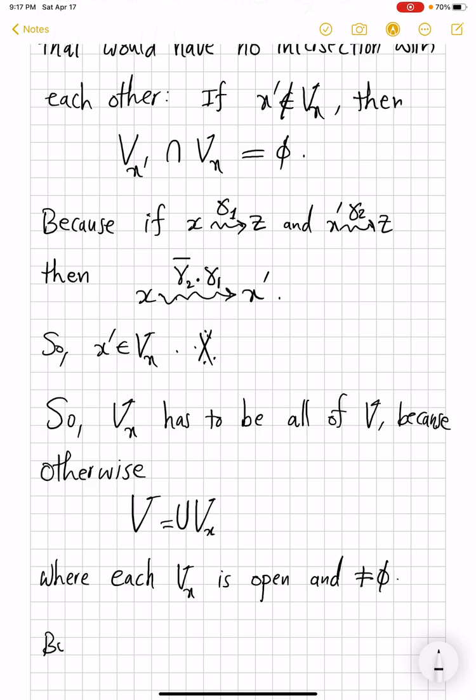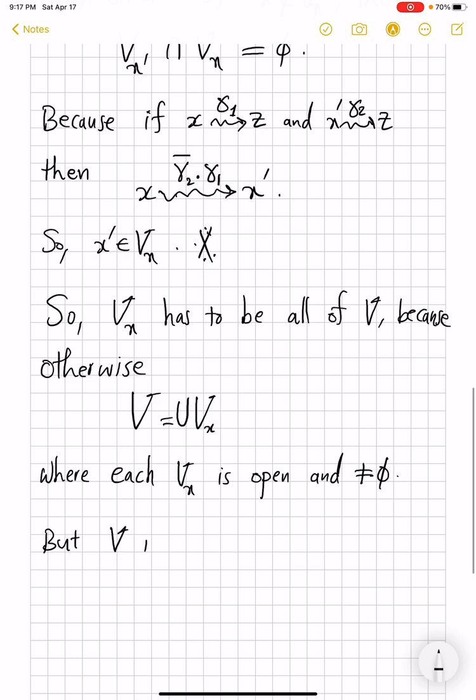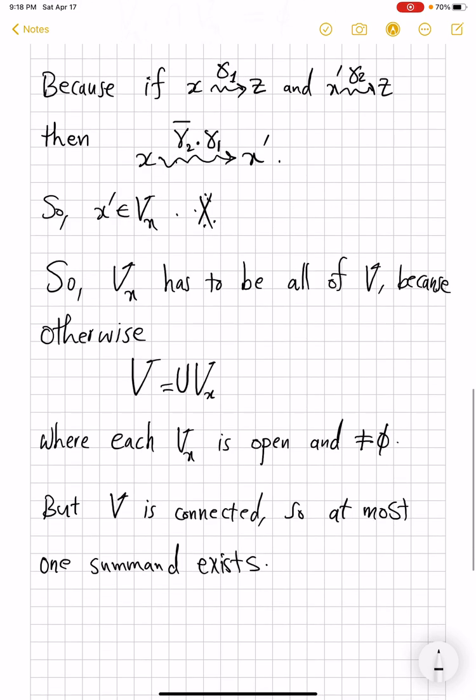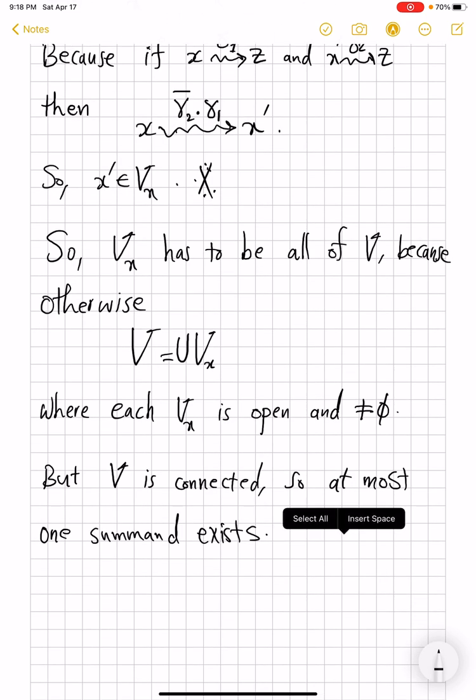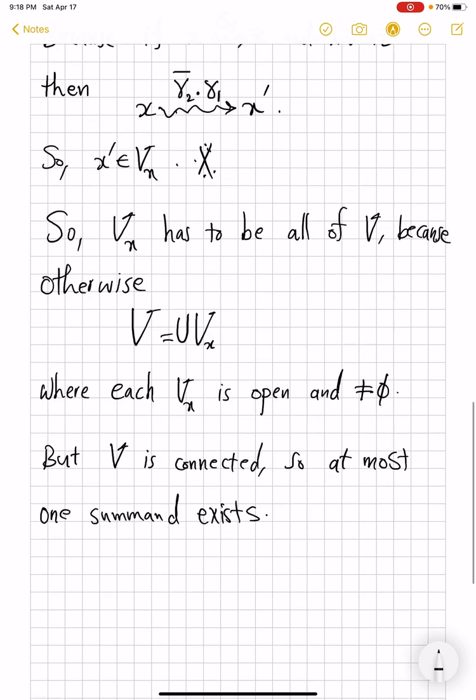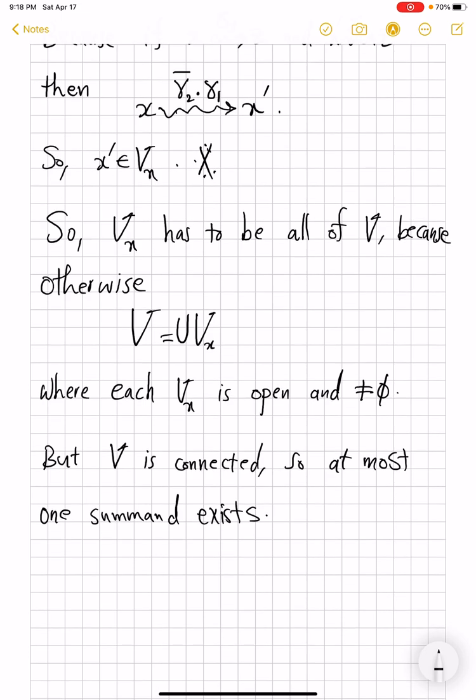But this is not possible, but V is connected. So at most one summand exists. If we had several of them, then you can separate one, and then still the union of the rest will be open. So you would have V equal to union of two distinct open sets, and that contradicts the connectedness of the set V.